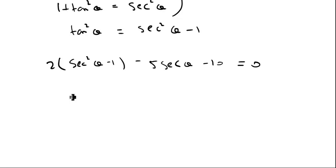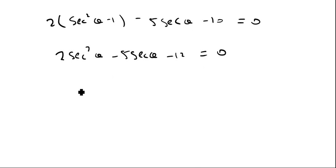If I then simplify that, I should end up with 2 sec squared θ minus 5 sec θ minus 12 is equal to 0. Okay, once again, I've got a quadratic, so let's write that as u equals sec θ, so I've got 2u squared minus 5u minus 12 is equal to 0.